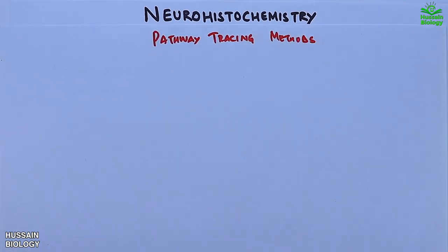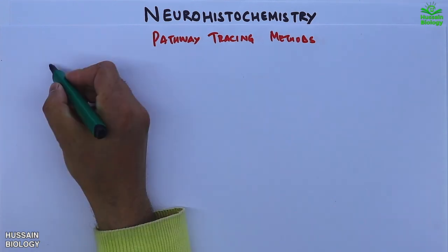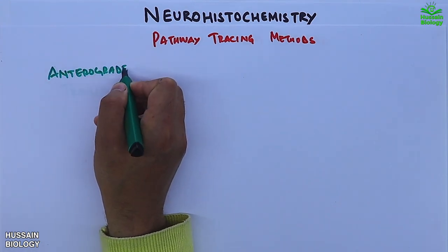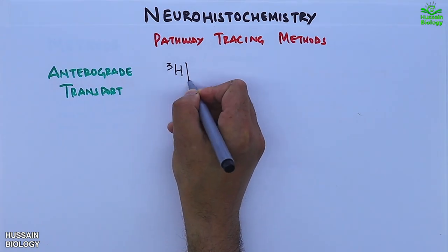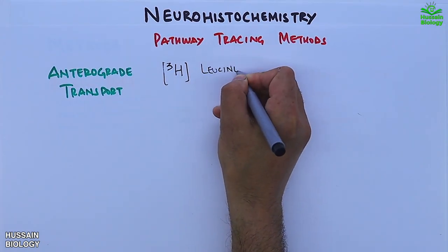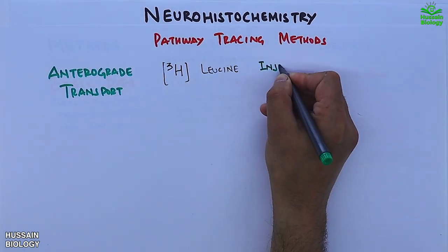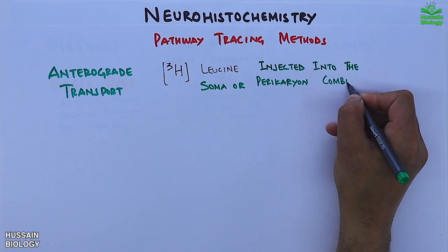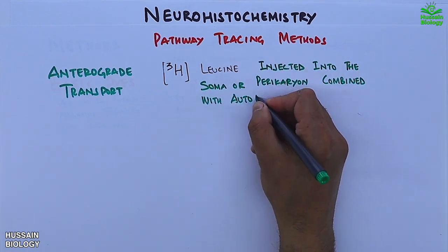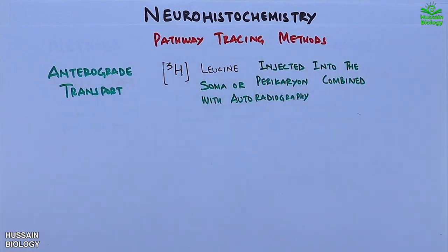Furthermore, we have pathway tracing methods, for which we use histochemical stains to trace out pathways. First we have anterograde transport, where we use radiolabelled leucine in the form of ³H-leucine, which is injected into the soma or perikaryon, combined with autoradiography to trace out the anterograde transport visually.